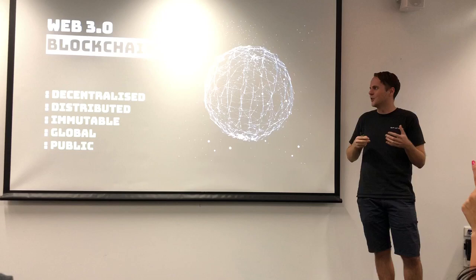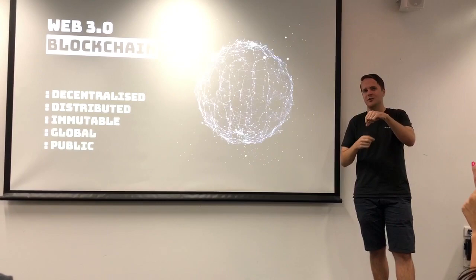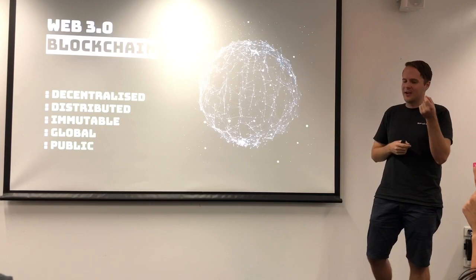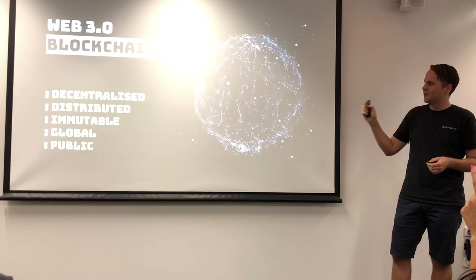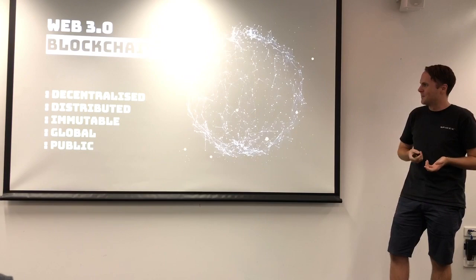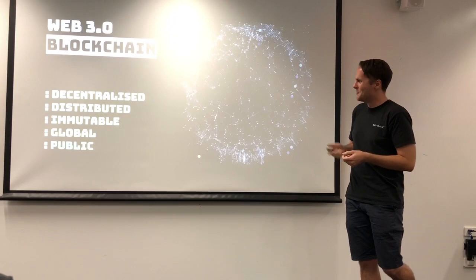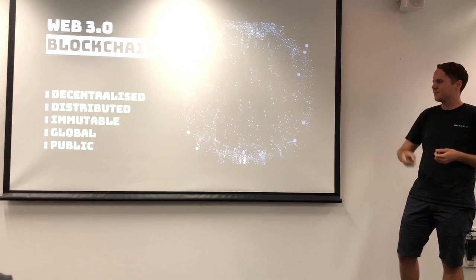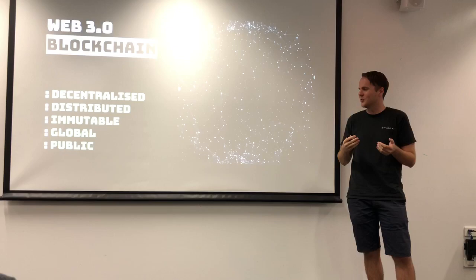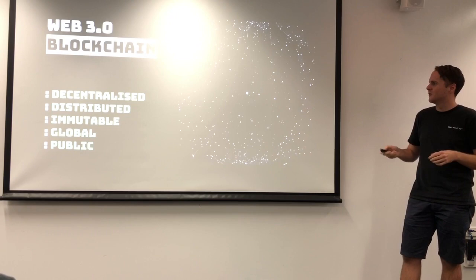It's got decentralization built into it, meaning you don't have centralized actors having control over any particular point of the network. That extends down to the physical code — the actual underlying blockchain architecture and all the applications that sit on top of it. It's also distributed, a bit like torrents. It's immutable — basically a permanent ledger; you can't really change what gets added to the blockchain. It's also global and public — open data, open access — what the web was meant to be in the beginning.